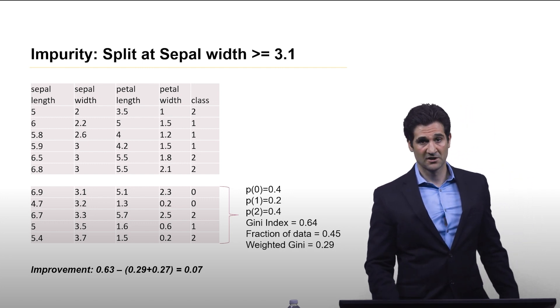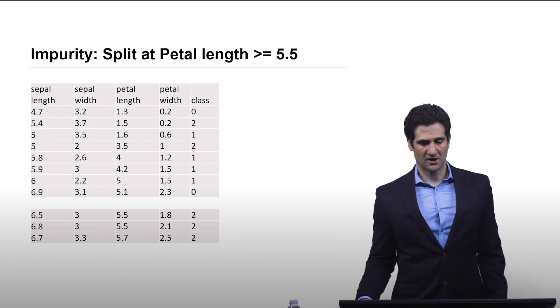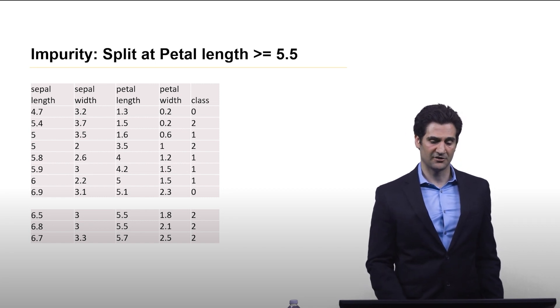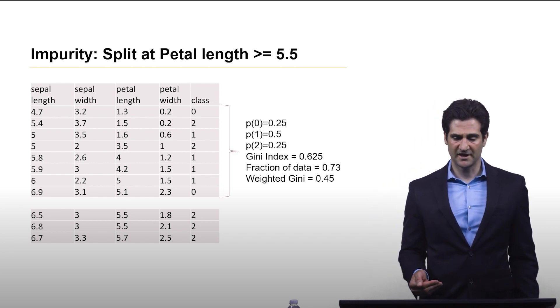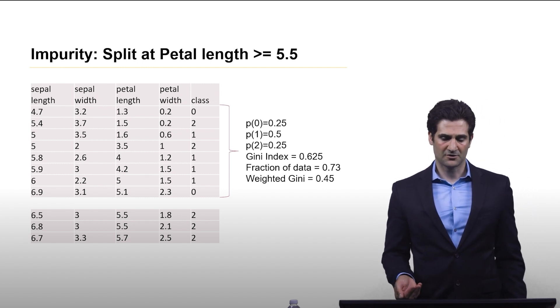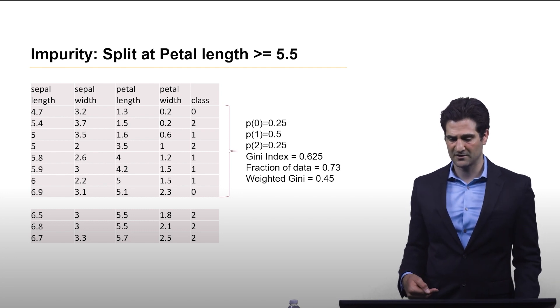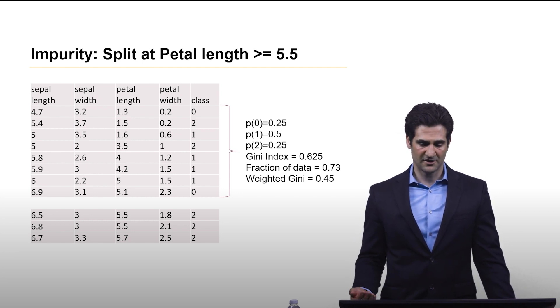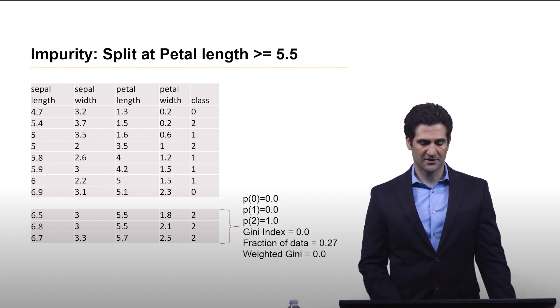Let's look at petal length, and let's say the algorithm picked a length of 5.5 and it now is divided the two classes into this way. So at the top half of the data, we see that the probability distribution is 0.25, 0.5, and 0.25 for each of the three classes, respectively. And this gives us a Gini index of 0.625. It's about three quarters of the data, so it has a weighted Gini index of 0.45.